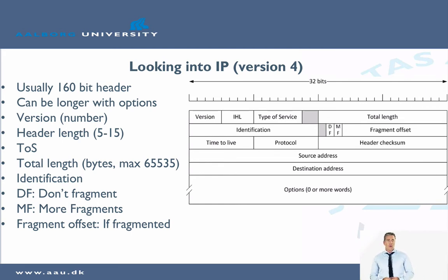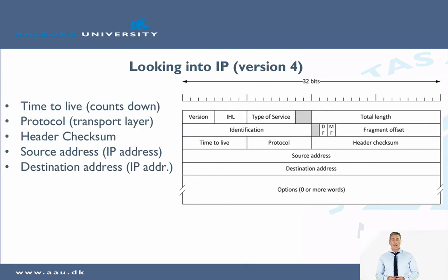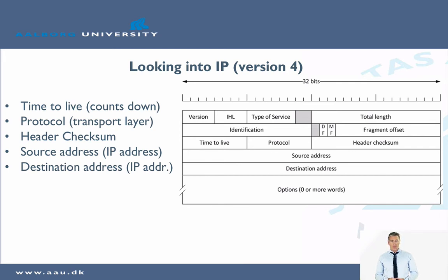Then you have a time-to-live (TTL), which is used to make sure a packet doesn't live forever. When routing on the internet, every time the packet meets a new router, the TTL is reduced by 1. So even if there is an error in the routing tables during hop-by-hop routing, you are sure that packets cannot circulate around forever. You also have a protocol field indicating which protocol is used on top of IP, and a header checksum which verifies that the header was received correctly.